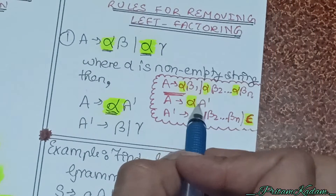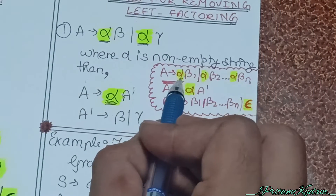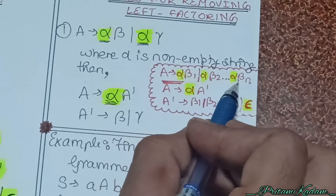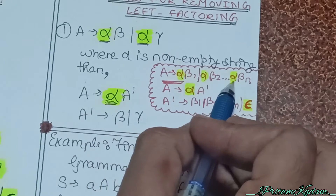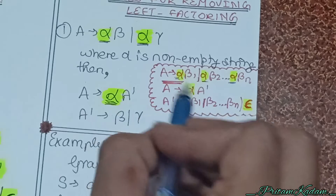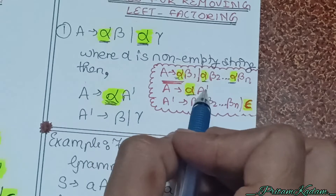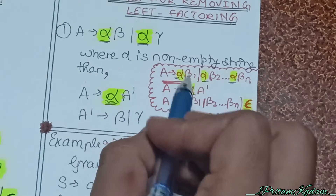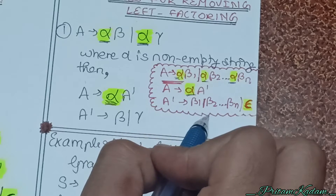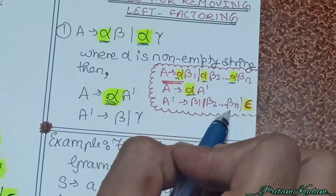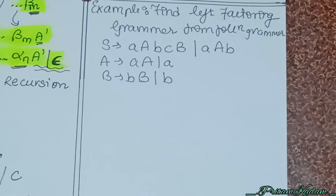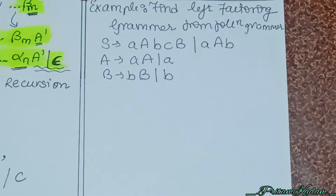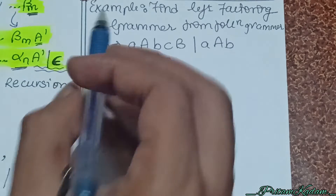If we have a lot of productions with the same factors, I will combine all the common part — that is alpha — and write A' after it. The A' production will then be β₁ | β₂ | ... | βn, and also epsilon by default. Epsilon means empty.